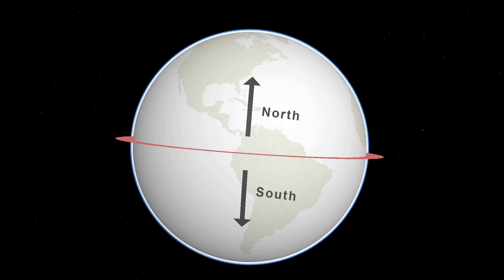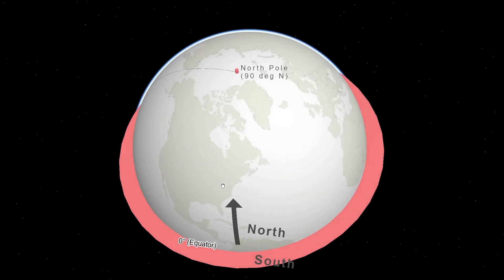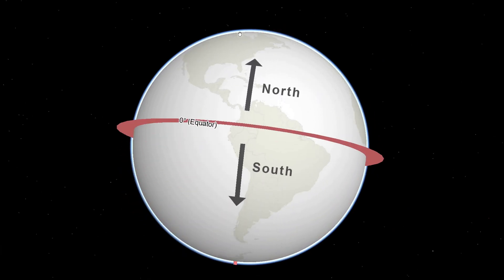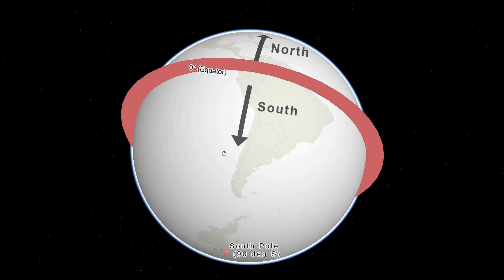Latitude ranges from 0 degrees, where that plane intercepts the Earth's surface, to 90 degrees north at the north pole and to 90 degrees south at the south pole.